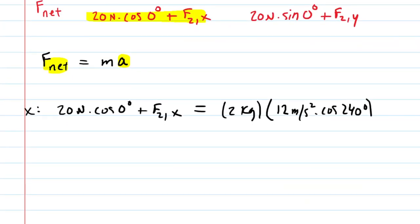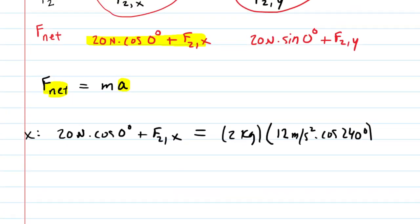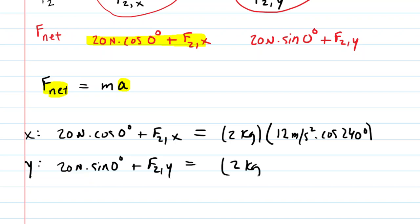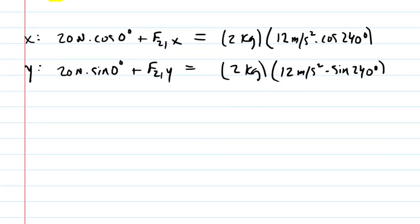We do something very similar in the y direction: the net force is 20 newtons times sine of zero degrees plus F2y, and that equals 2 kilograms times the acceleration in the y direction, which is 12 meters per second squared times the sine of 240 degrees. Now we have these two equations and it's relatively easy to solve for the x and y components.